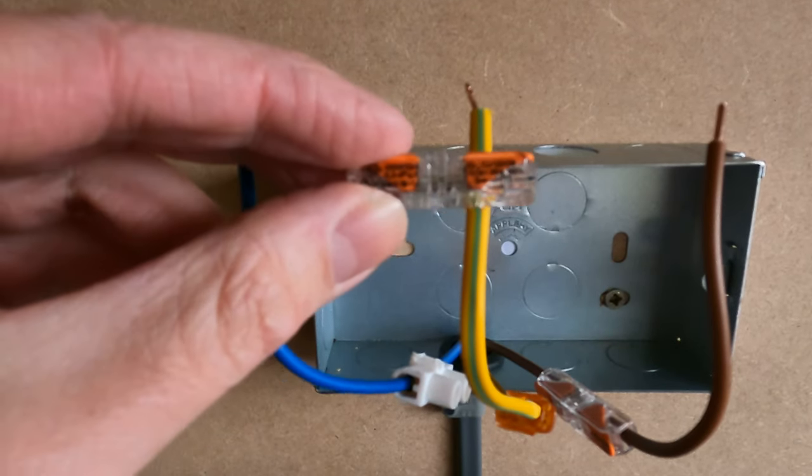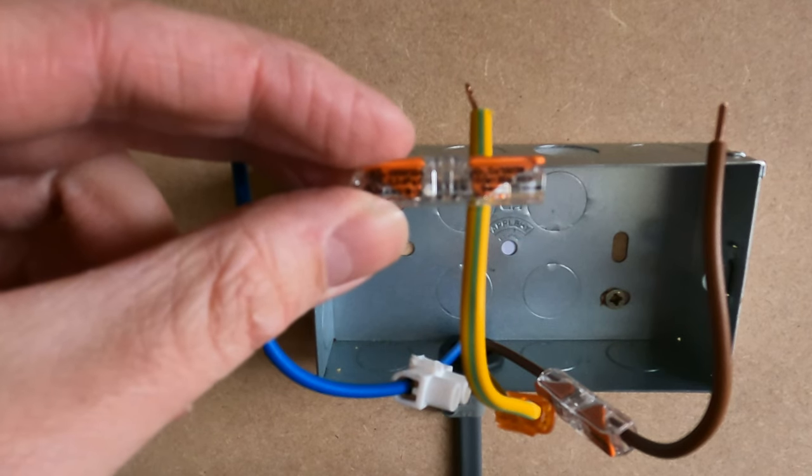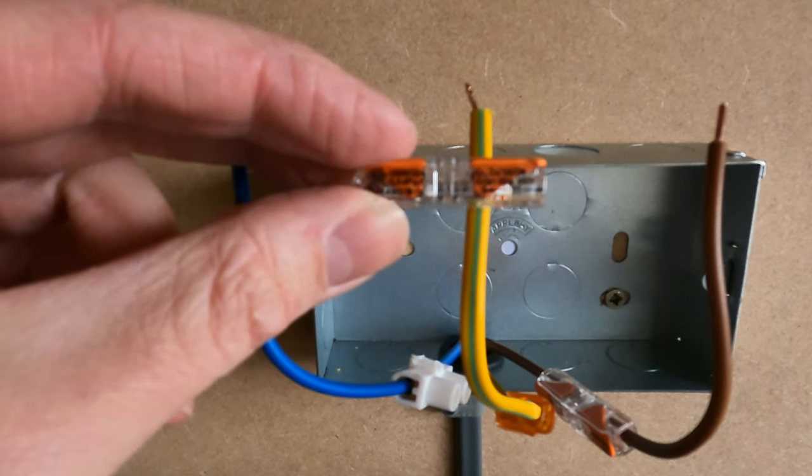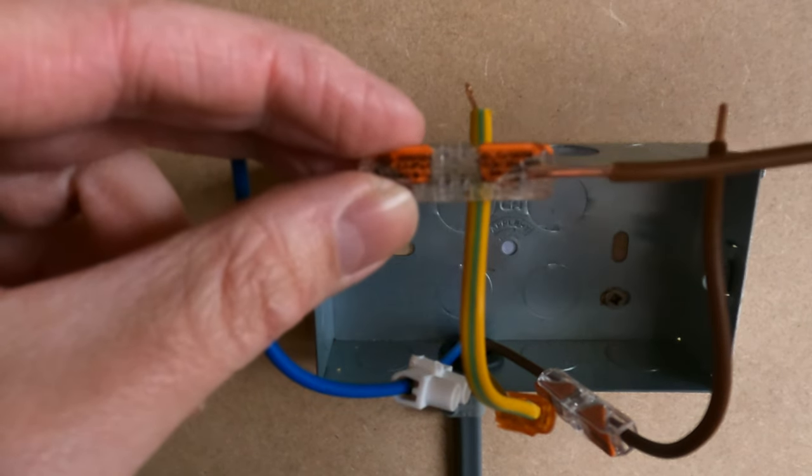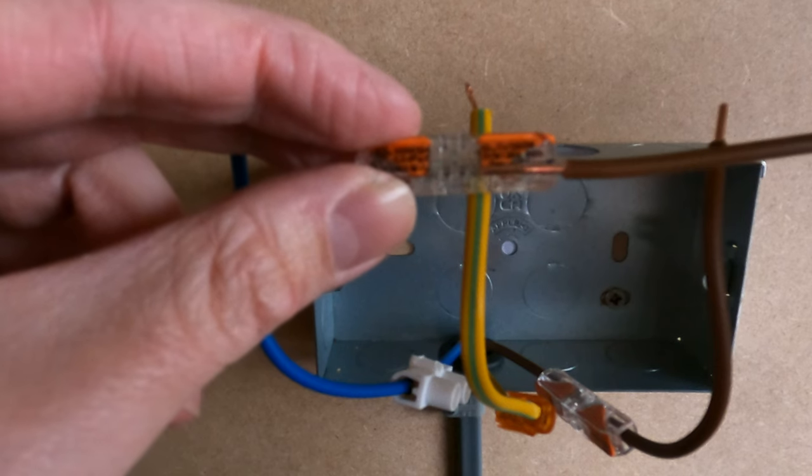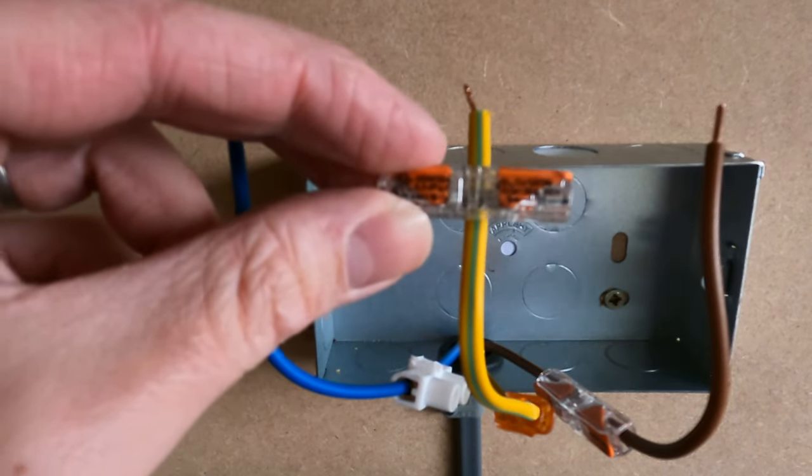So these are definitely my favorite way of connecting and extending wires. And these Wagos can accommodate a range of different sizes for your cable from 0.2 mil right the way up to 4 mil. And the other thing I like about it is there's a little diagram there where it shows you how much to strip off your cable, it's 11 mil, which is quite a handy little feature as well.